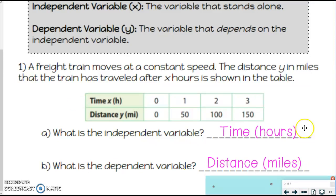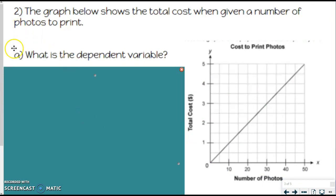Now, I also put the labels here. You can if you want to. You don't have to. But the pieces we really need is independent variable is time. Dependent variable is distance. Let's try one more with a graph. So the graph below shows the total cost when given a number of photos to print. So if we look at our graph here, we see we've got number of photos, total cost.